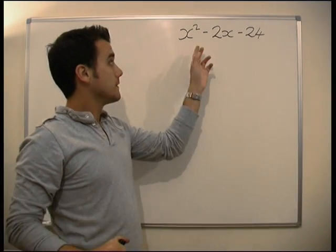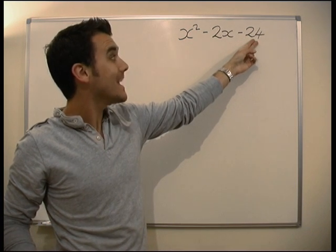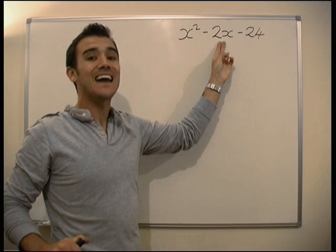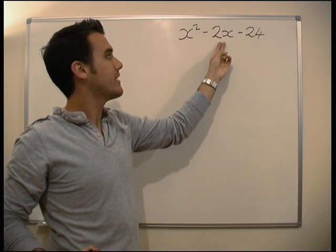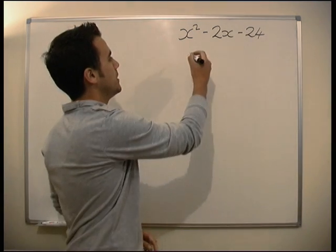What we need to do is look at it and think - we need two numbers that times together to give us 24 and either add up to make 2 or have a difference of 2. So what could they be?